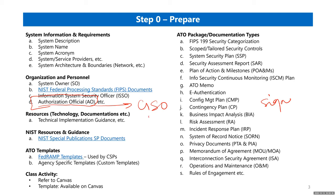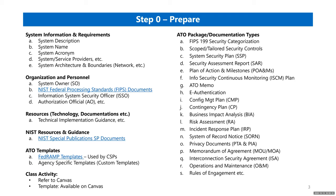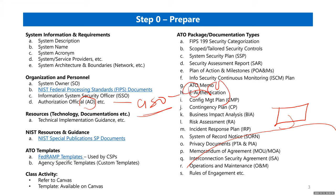Do not treat the Authorizing Official as a dedicated rank. The CISO — Chief Information Security Officer — could be the AO. It depends on how the organization wants to inject its checks and balances and the hierarchy of the system itself.